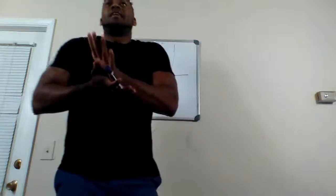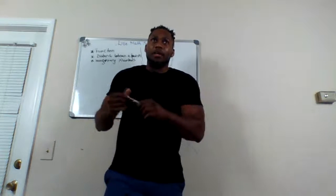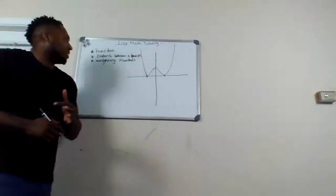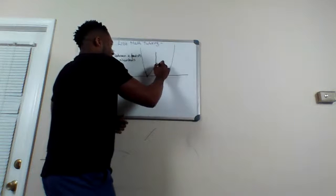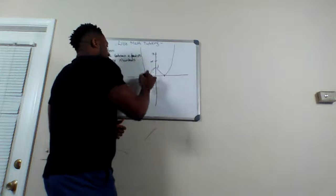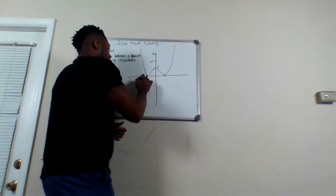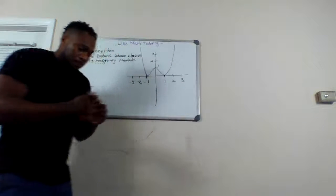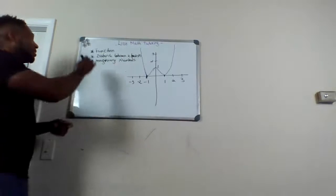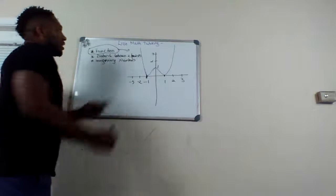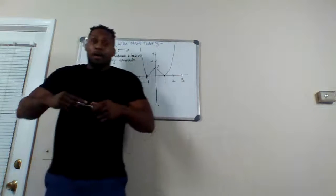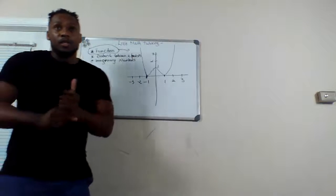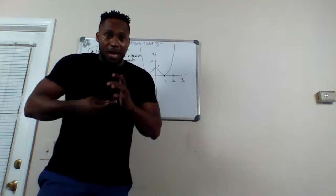So the first thing we have is a function, and what they ask us for is the domain, the range, the intercepts, and a few other things. Let me write this here. We have 1, 2, 3, negative 1, negative 2, negative 3 on both axes. What they give us is this graph, and they say: using this graph, what's the domain of this function, what's the range? I'll look at the questions as we go along.